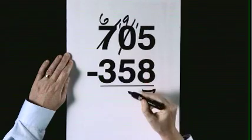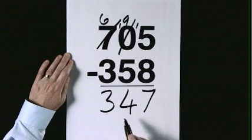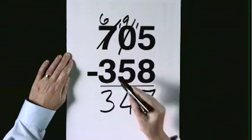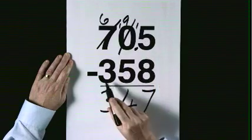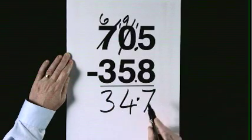9 take 5 is 4. 6 take 3 is 3. 347. 70.5 take away 35.8 would make 34.7.